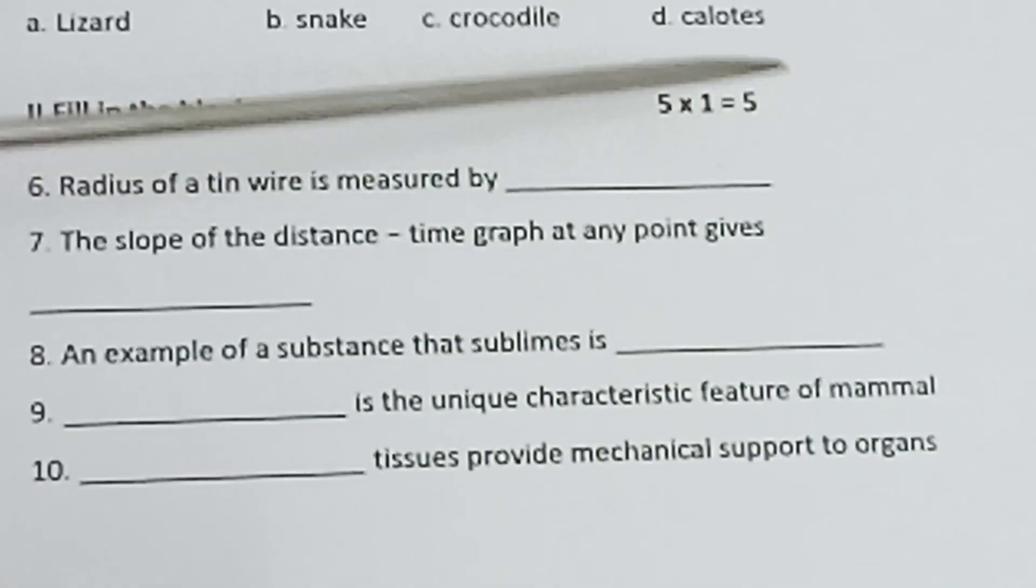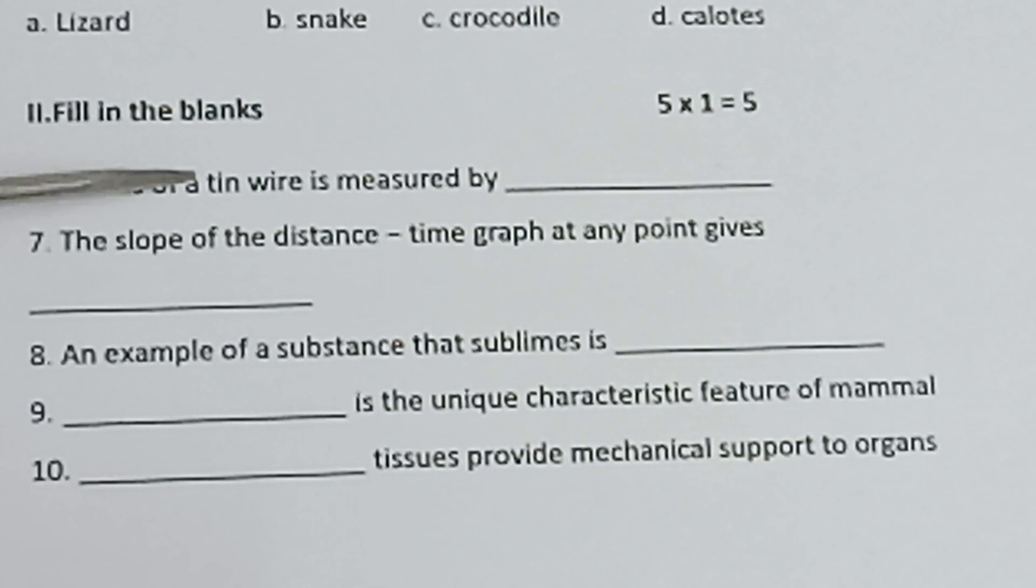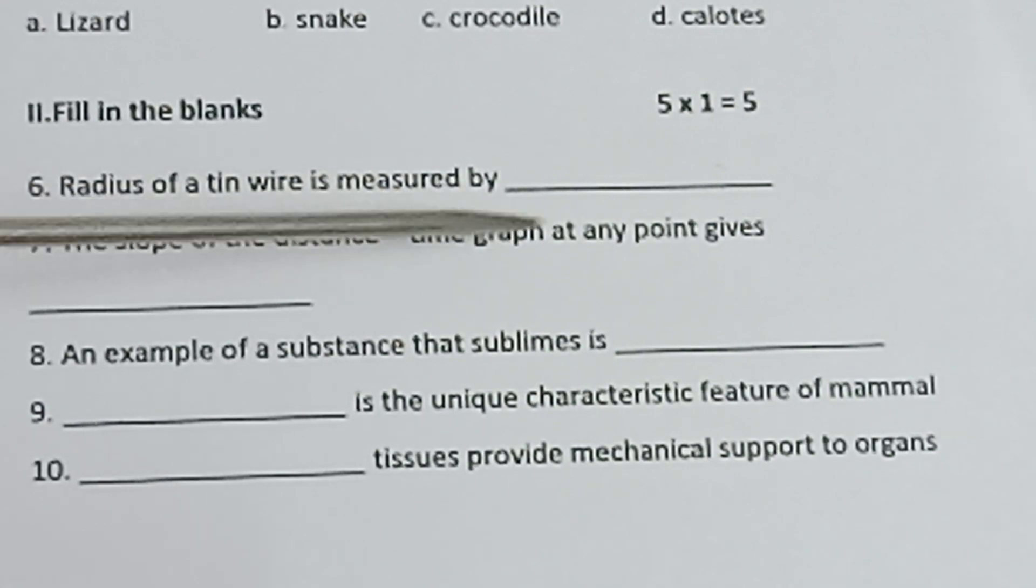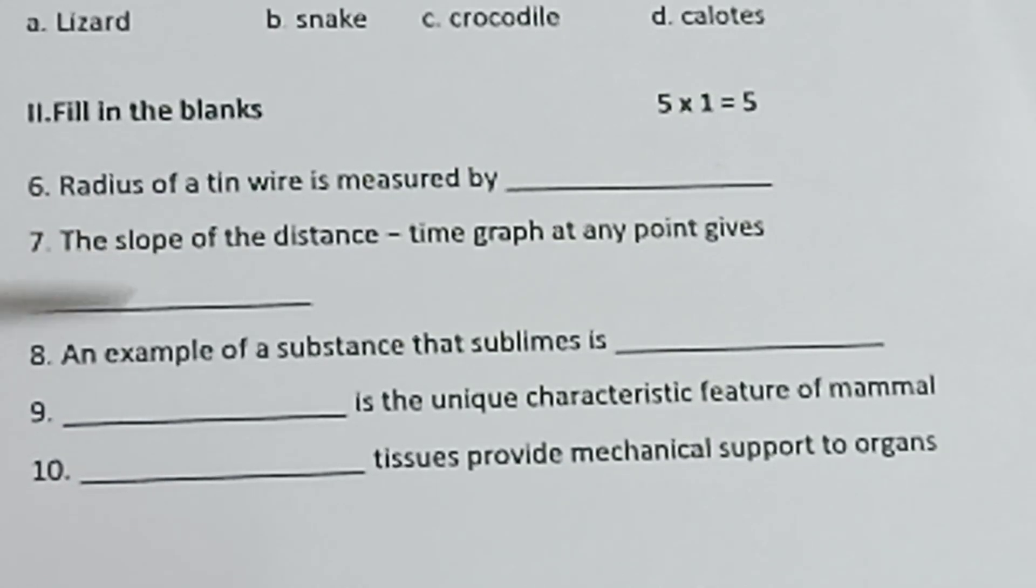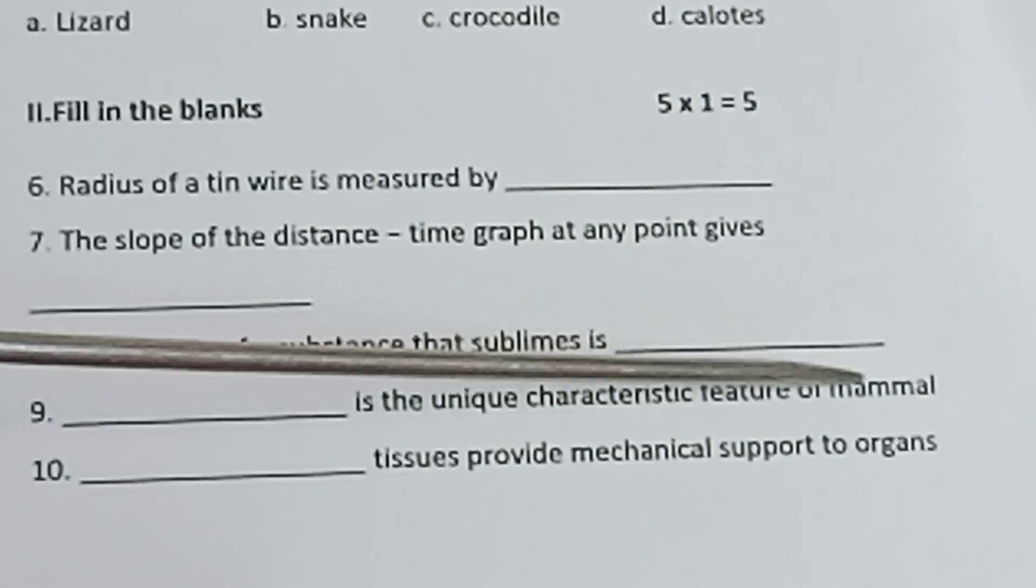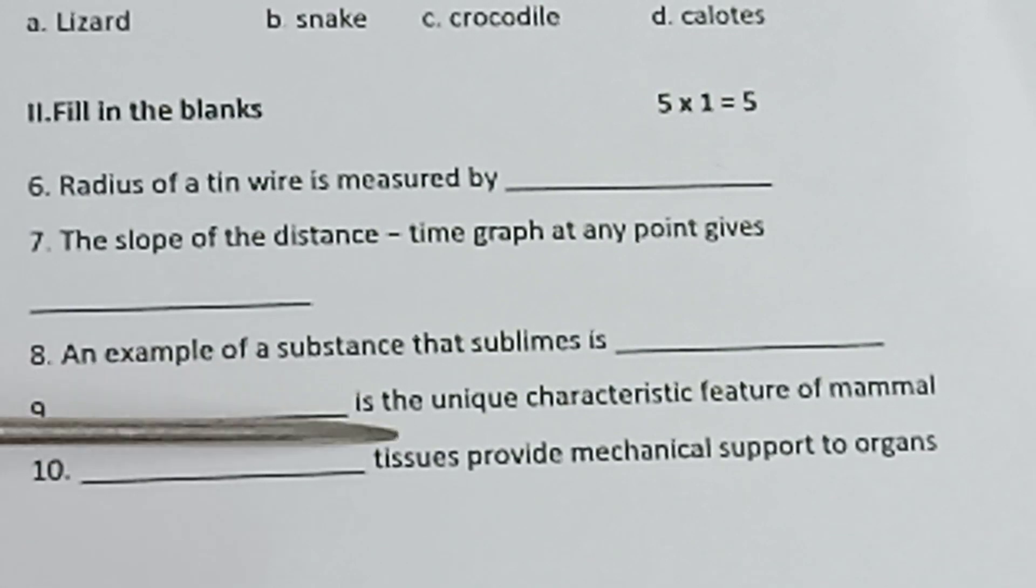Part 2: Fill in the blanks. 5 x 1 = 5. Question 6: Radius of earth is measured by dash. Question 7: The slope of the distance-time graph at any point gives dash. Question 8: An example of a substance that sublimes is dash. Question 9: Dash is the unique characteristic feature of mammals. Question 10: Dash tissues provide mechanical support to organs.